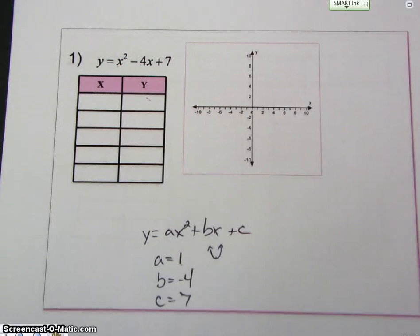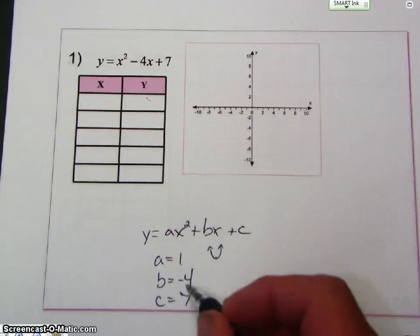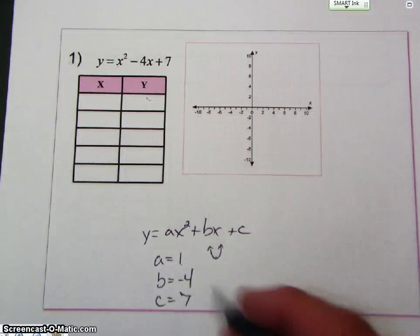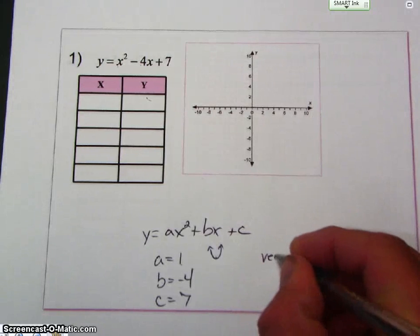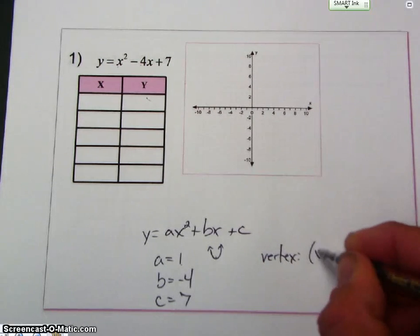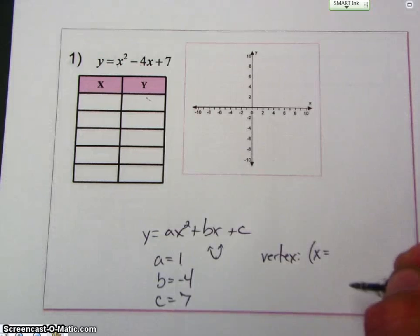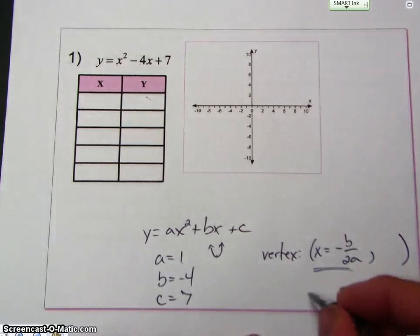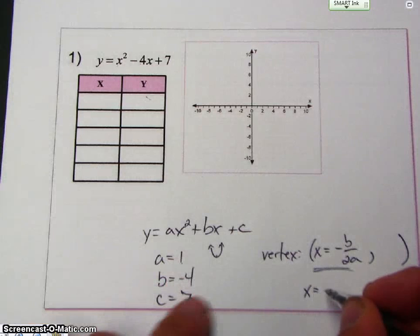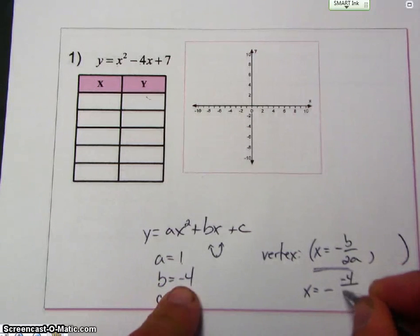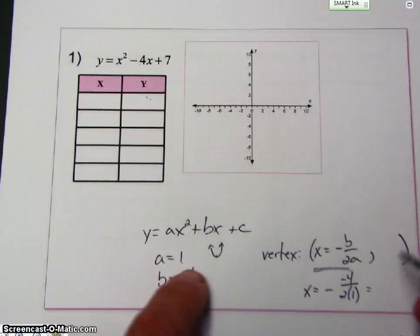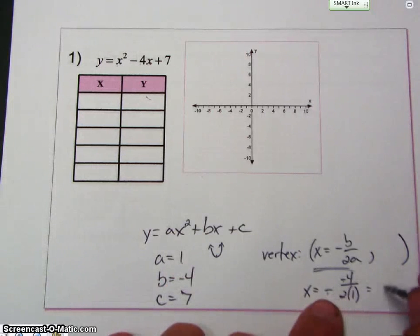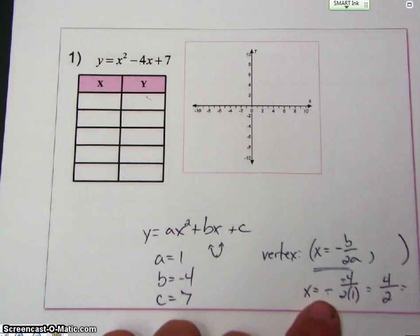So I'm going to have a vertex which will be the lowest point. B is negative 4, so let's go ahead and find the vertex. Remember, X is equal to negative B over 2A. So X equals negative B is negative 4 over 2 times A, which is 1. So negative times the negative is positive, and 4 divided by 2 is 2.